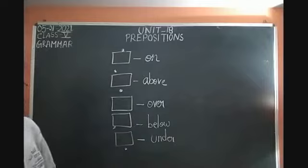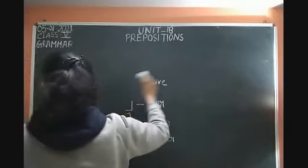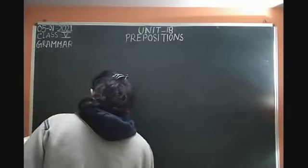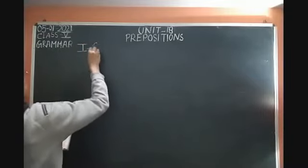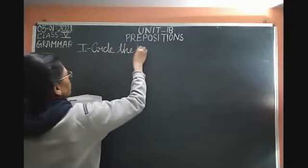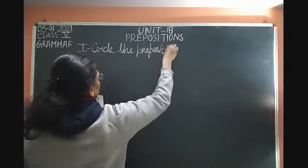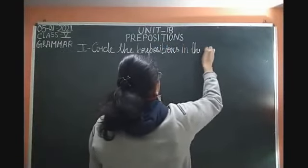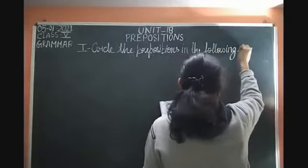Now let's start with Exercise One — circle the prepositions in the following sentences. Each sentence has got a preposition. We need to identify the preposition and make a circle on it.